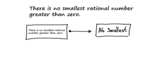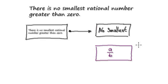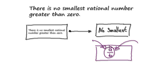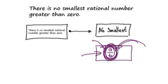With proof by contradiction, we're going to assume the opposite. We're going to assume that there does exist a rational number — the smallest possible rational number there is out there. We're going to assume that this number here exists and it happens to be the smallest. This is our assumption: this is the smallest rational number.